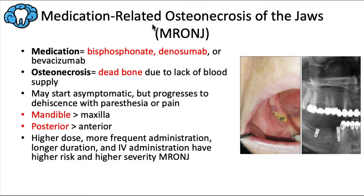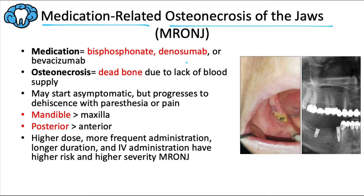Next we have to talk about medication-related osteonecrosis of the jaws, or MRONJ. It's medication-related because it's caused in part by a certain medication like a bisphosphonate, denosumab, or an anti-angiogenic drug like bevacizumab. It's called osteonecrosis of the jaws because the result is dead bone due to a lack of adequate blood supply. This term replaced bisphosphonate-related osteonecrosis of the jaws, or BRONJ, because other anti-osteoporotic drugs like denosumab were discovered to cause this condition as well.